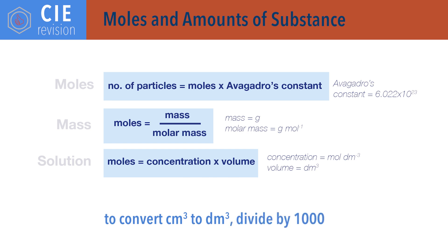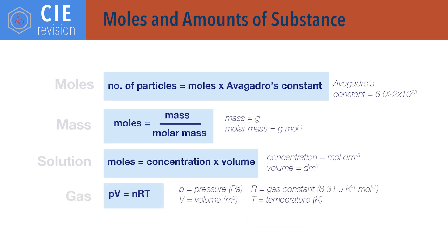PV equals nRT. This is the ideal gas equation, where P equals pressure in pascals, V equals volume in metres cubed, n equals number of moles, R is the universal gas constant — 8.31 joules per kelvin per mole — and T is temperature in kelvin.